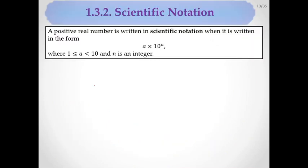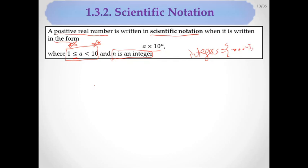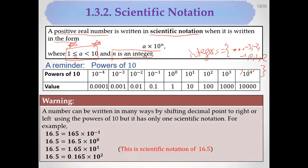Scientific notation: a positive real number is written in scientific notation in the form A times 10 to the N, where A is between 1 and 10 (including 1), and N is an integer. A number can be written in many ways by shifting the decimal point right or left using powers of 10, but it has only one scientific notation form.